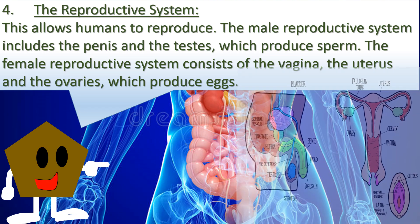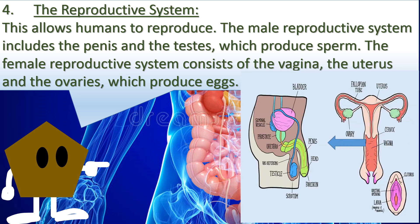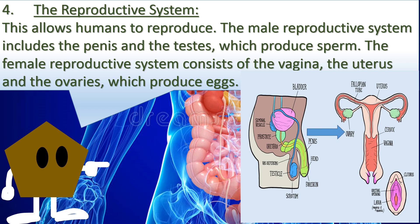4. The reproductive system allows humans to reproduce. The male reproductive system includes the penis and the testes, which produce sperm. The female reproductive system consists of the vagina, the uterus, and the ovaries, which produce eggs.